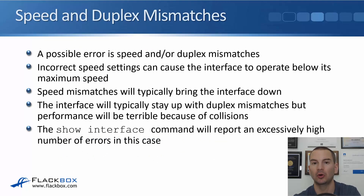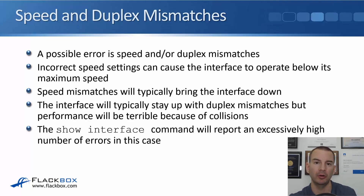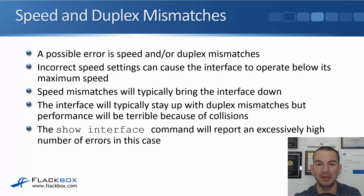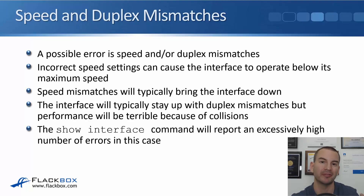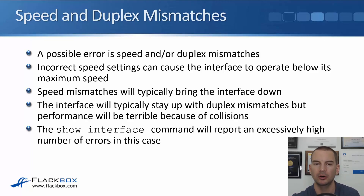A possible error you can have is speed and/or duplex mismatches on your interfaces. Incorrect speed settings can cause the interface to operate below its maximum speed — for example, if one side is set to auto and the other is set manually, or if both are set to auto and negotiation fails. If you've manually configured mismatched speeds on both sides, it will typically bring the interface down. A duplex mismatch will typically leave the interface up but cause terrible performance due to collisions, and a show interface command will report a really high number of errors.